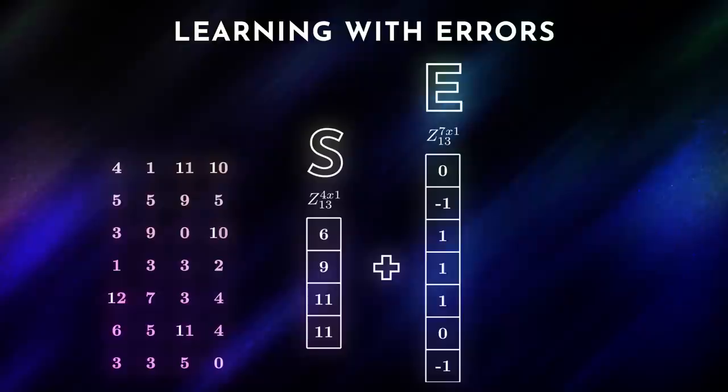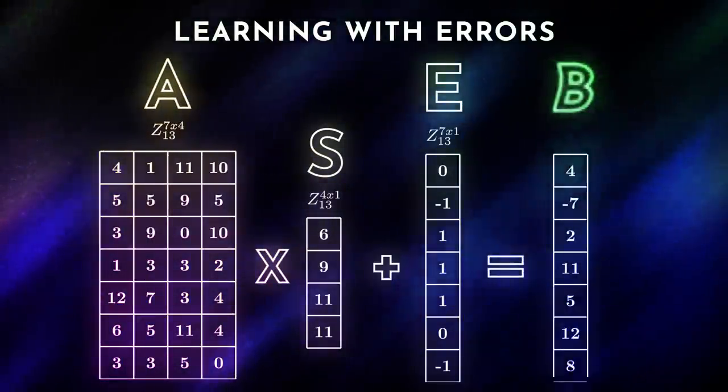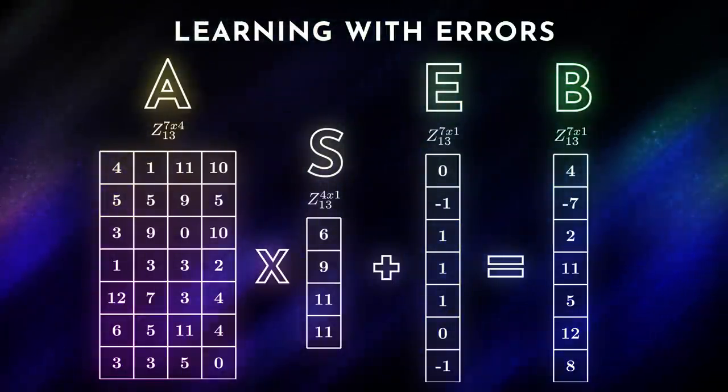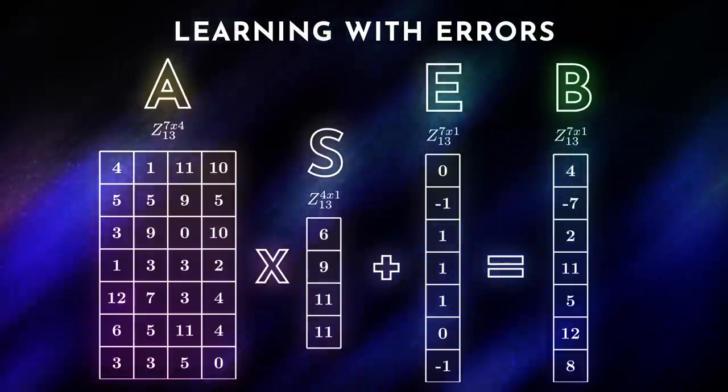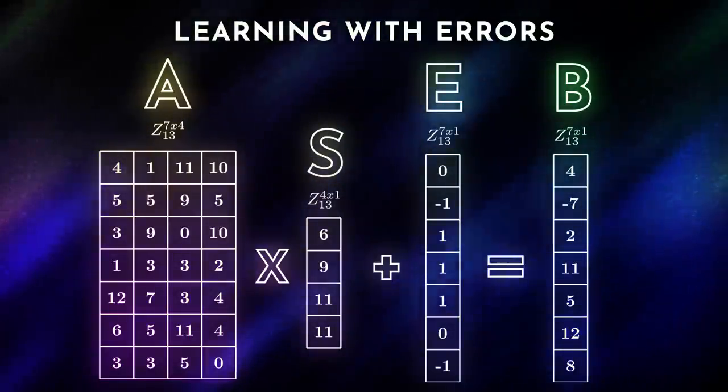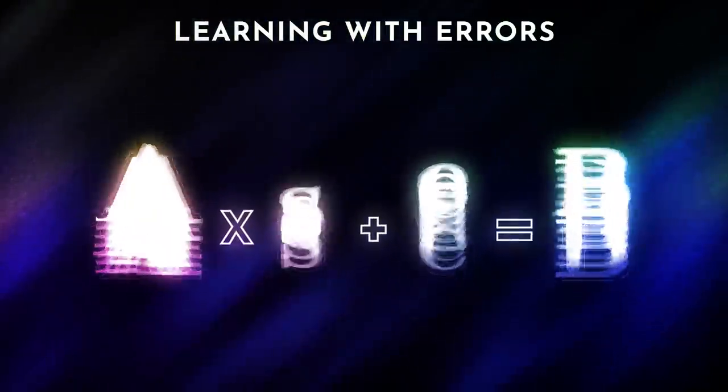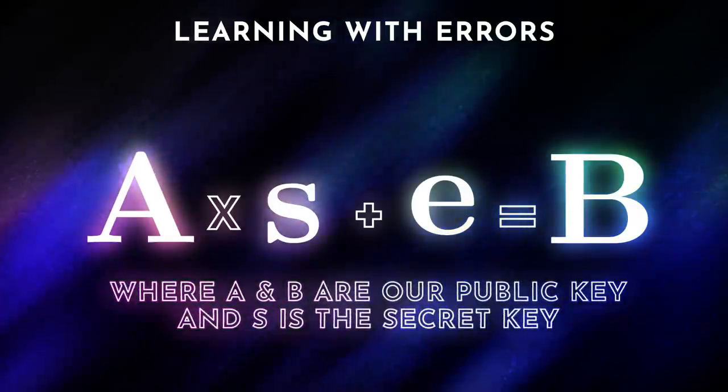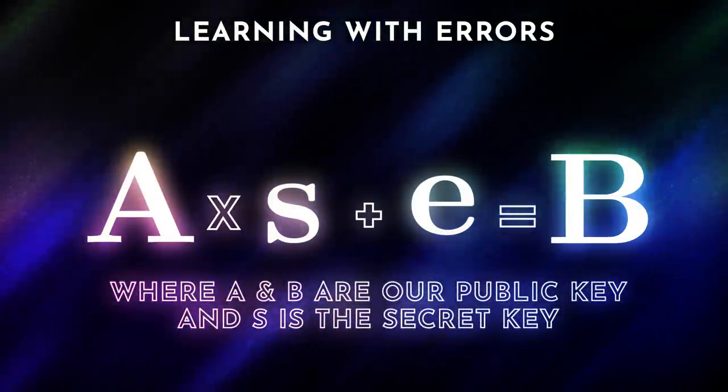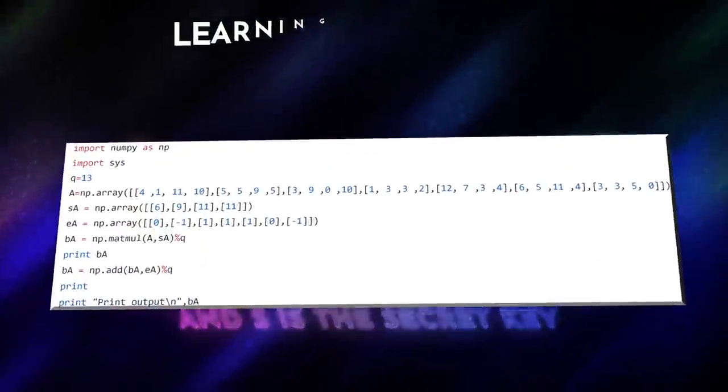Then we create a public key based on random numbers, A, and then generate another set of numbers, B. B is based on A, S, and E. The values of A and B become our public key. A and B are one-dimensional matrices when S is a single value. If we want S to be a one-dimensional matrix instead, A will be a two-dimensional matrix, and B will be a one-dimensional matrix. It turns out that quantum computers can't find the values which solve this equation, where A and B are known.